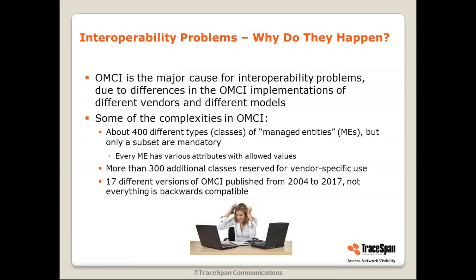So even though this is a standard intended to allow different vendors to interoperate, there is still significant room for vendor-specific implementations. Adding to this, there are 17 different versions of OMCI. OMCI started in 2004, and the last amendment is from 2017. During the years, there have been 17 different versions — each with different MEs and some changes in attributes — and not everything is backwards compatible. We can imagine what these complexities can cause in terms of interoperability.